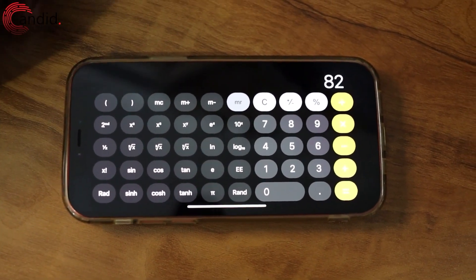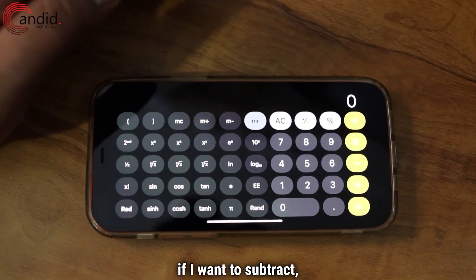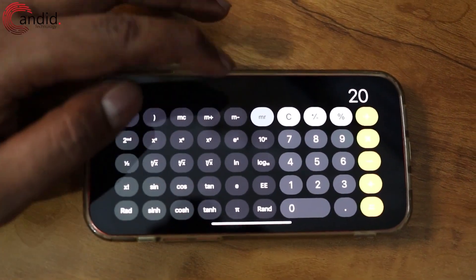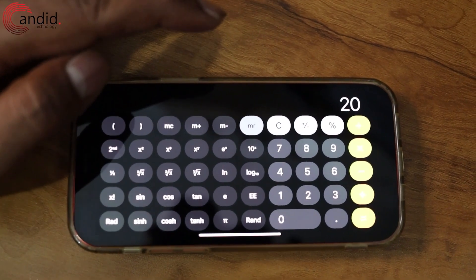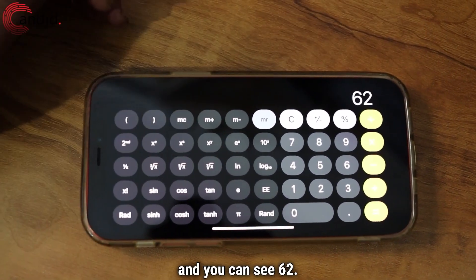Now, for example, if I want to subtract, let's say 20, I'll use M minus and then we'll use MR. And you can see 62.